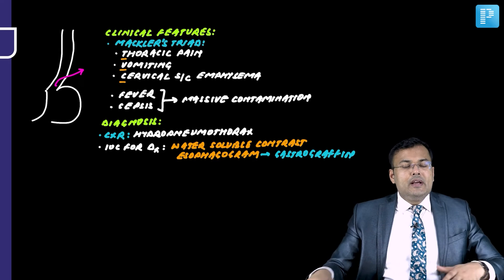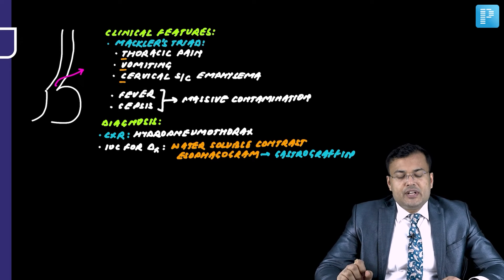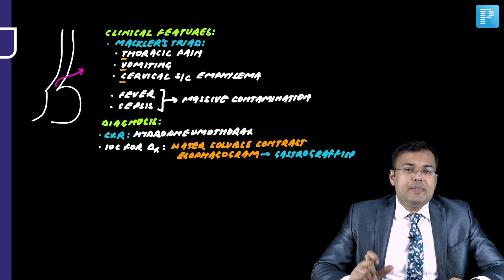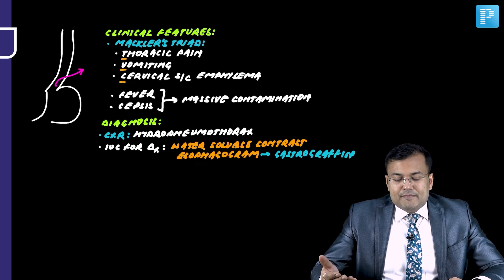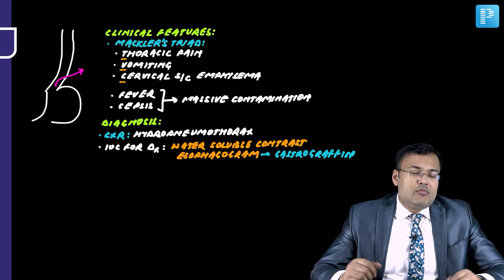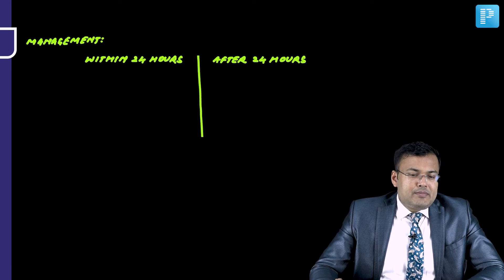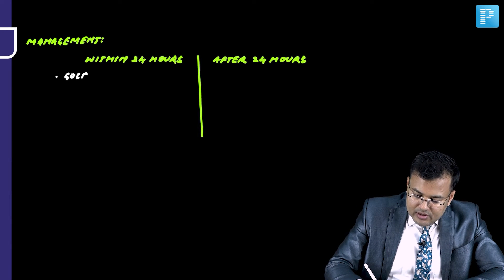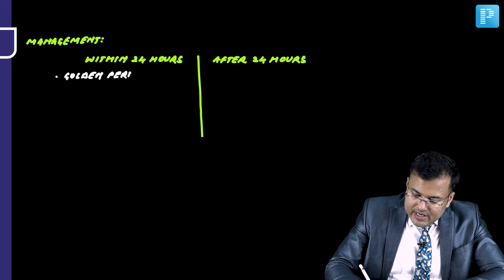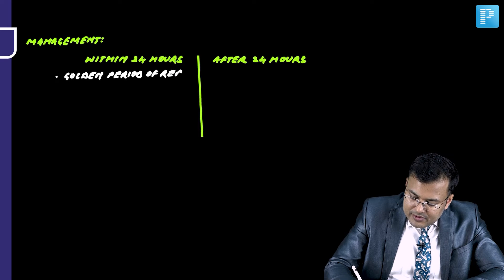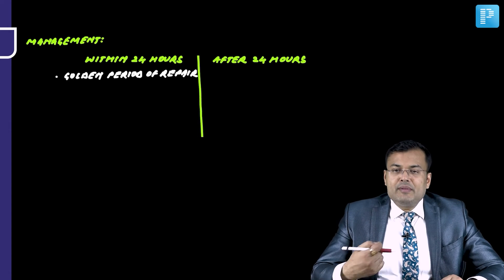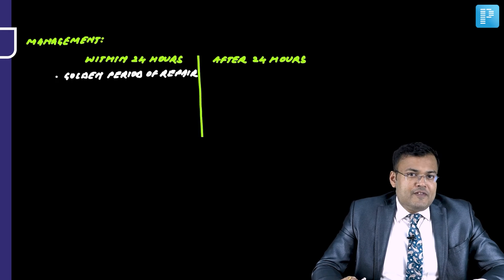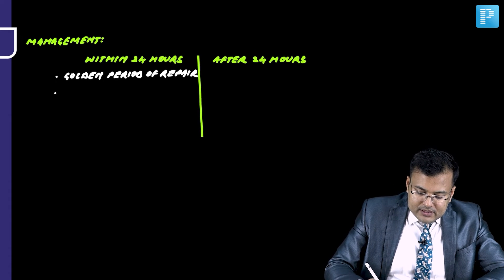Since there is full-thickness perforation, surgery is required. The type of treatment depends on the time of presentation. If the patient comes within 24 hours, this is the golden period of repair, and mortality is much lesser. If the patient comes after 24 hours, mortality can be more than 50%. Within 24 hours, we perform repair of the perforation, ICD insertion for contamination in the thorax, and feeding jejunostomy for adequate nutrition.